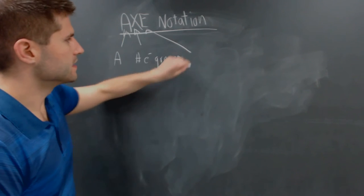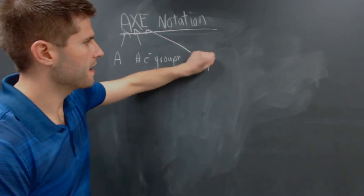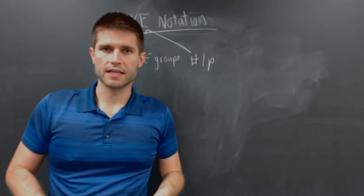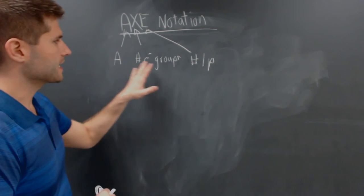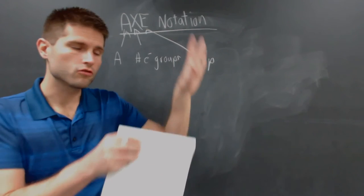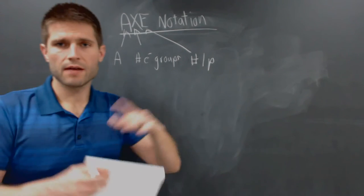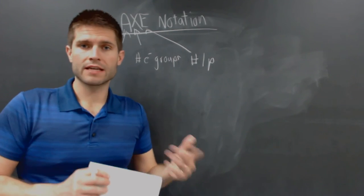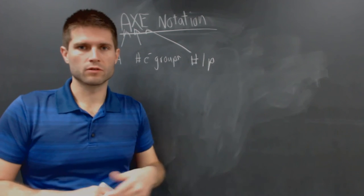Now the E is the number of lone pairs that are surrounding the central atom. So this tells us exactly how many bonds, how many electron groups are around the central atom, as well as how many lone pairs. And with that, we can identify what type of a system we're looking at.